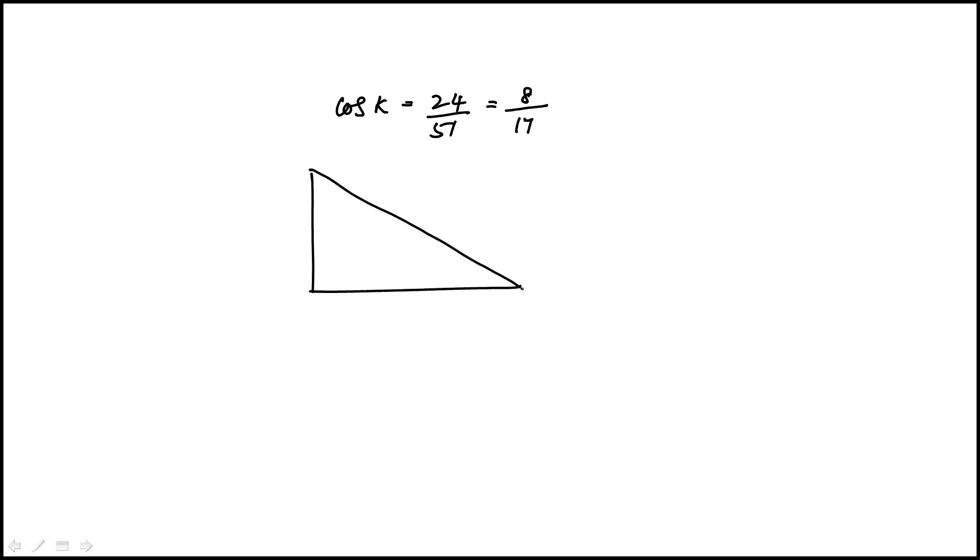So if I draw this right triangle JKL, J is the right angle. Cosine K—again, this is 8 over 17—is one of the familiar right triangles,